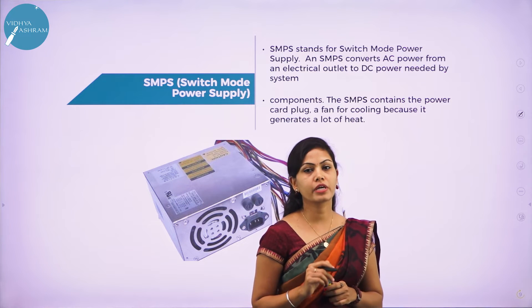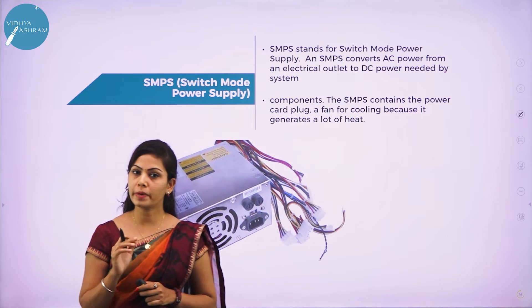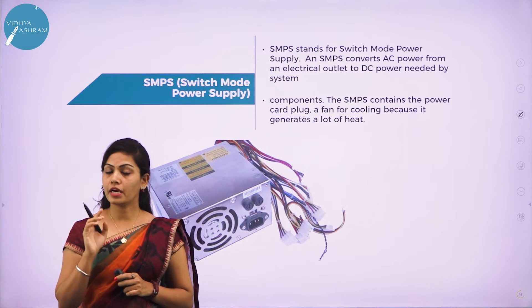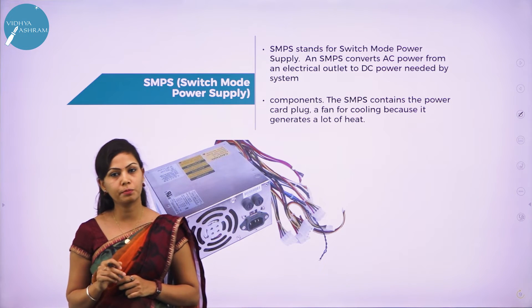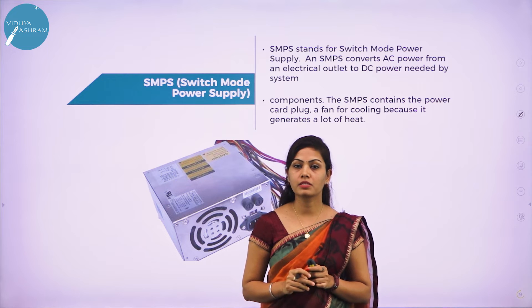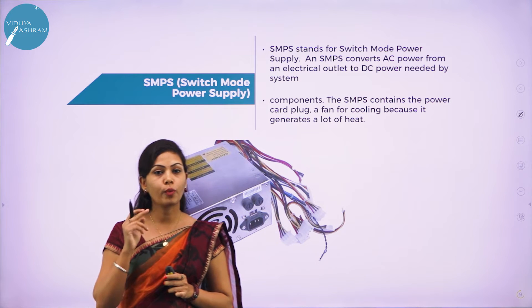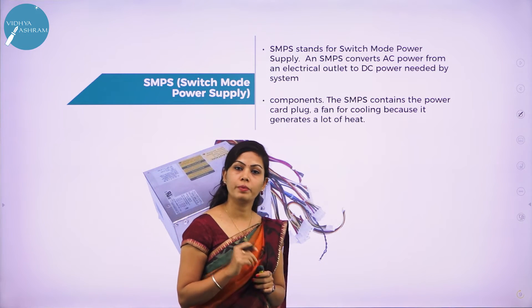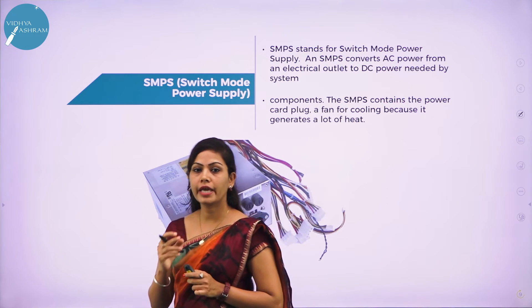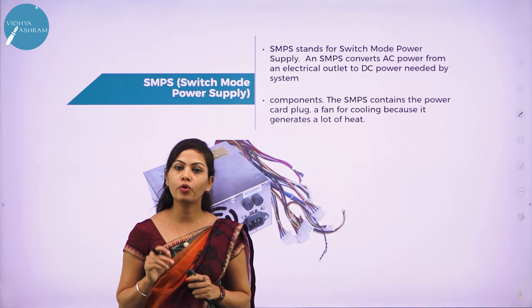Electric power is the main source of supply for the operation of electronic components of a computer. There are two types of power supply connected to a computer system: SMPS and UPS. SMPS stands for switch mode power supply. Switching power supplies have high efficiency and are widely used in a variety of electronic equipment, including computers and other sensitive equipment requiring stable and efficient power supply.